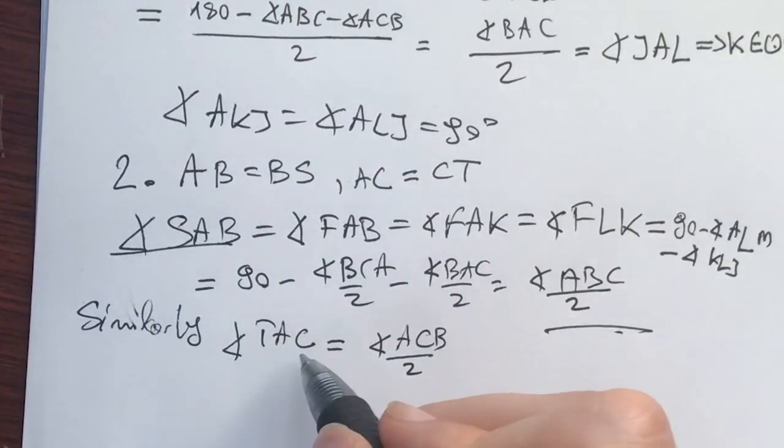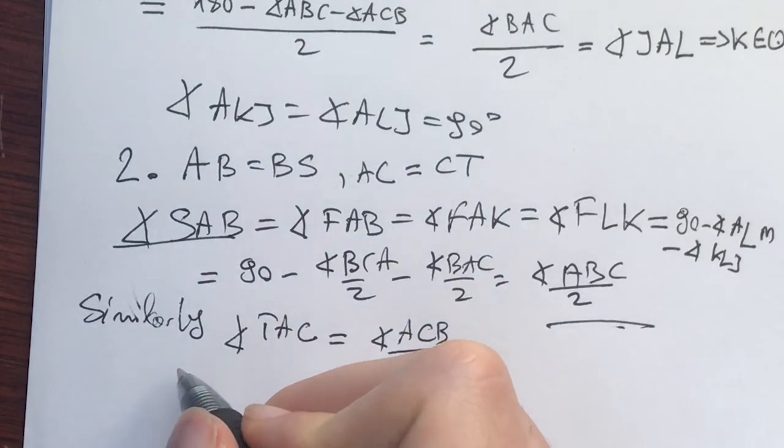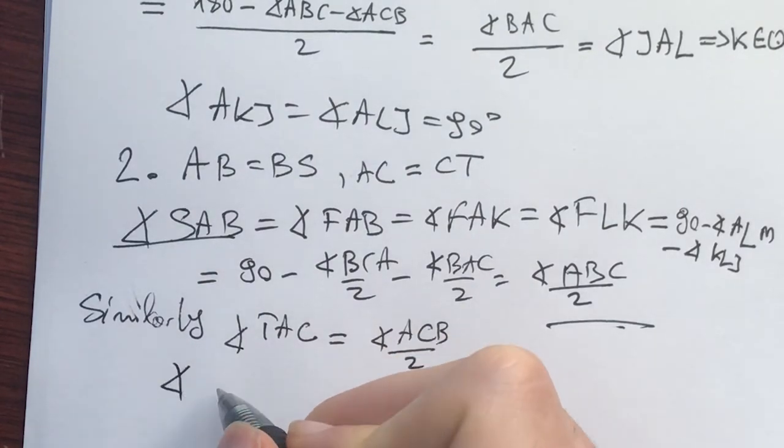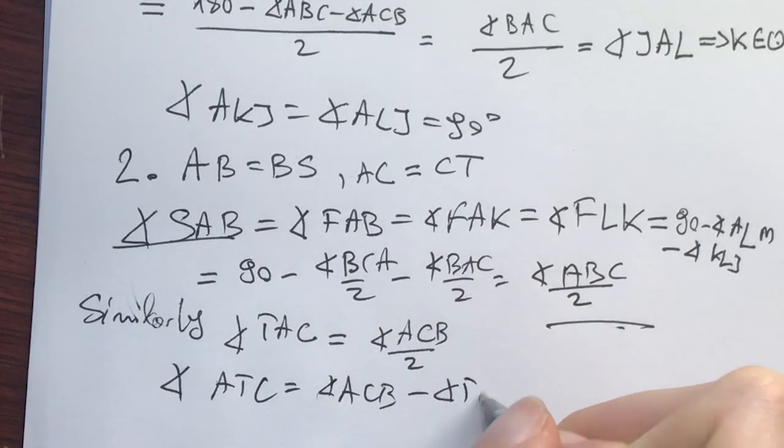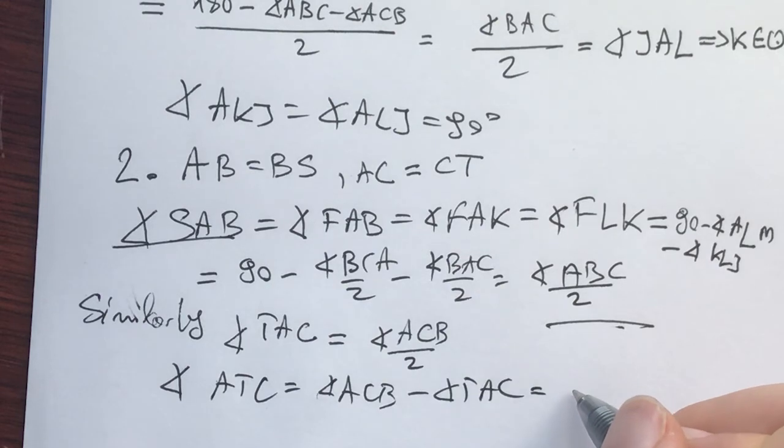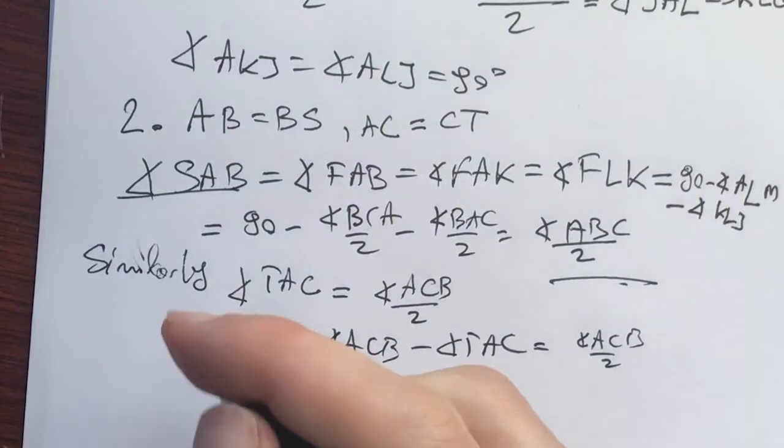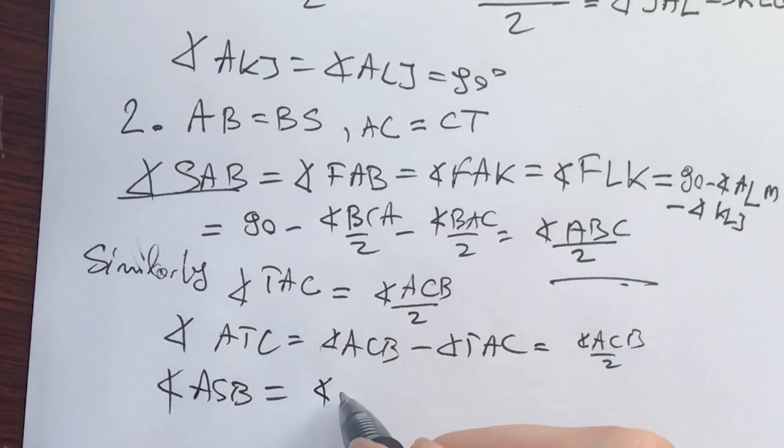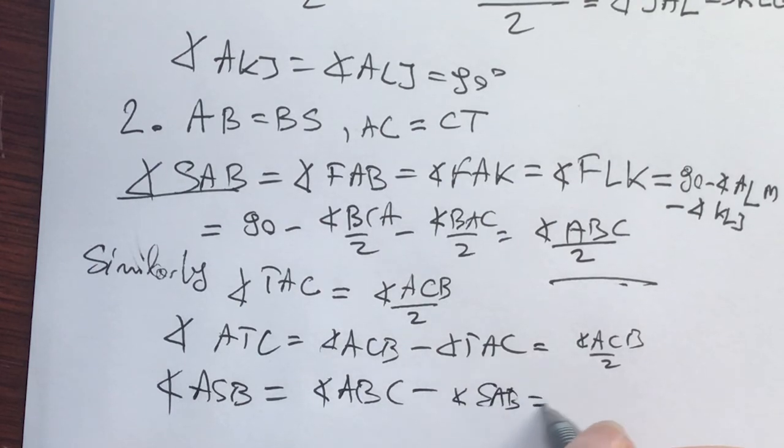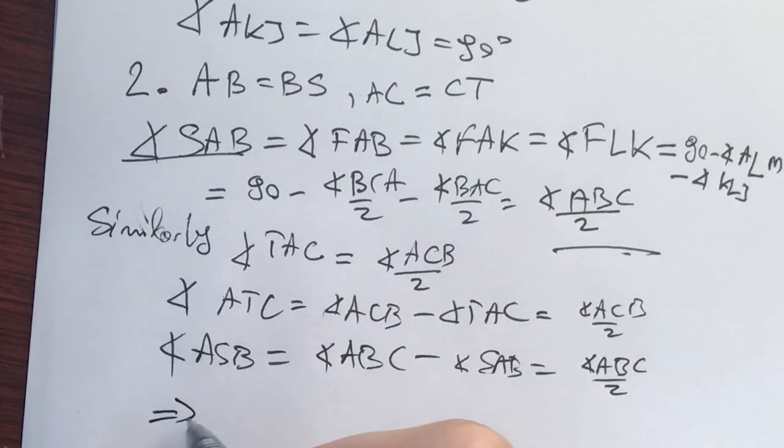And now this right here implies what? Because SAB is ABC over two. Similarly, angle TAC is equal to ACB over two. And now we know that angle ATC is equal to the angle ACB minus the angle TAC. And this is equal to ACB over two. And similarly, the angle ASB is equal to the angle ABC minus the angle SAB, which is equal to ABC over two. And now these things imply that AC is equal to CT and that AB is equal to BS.